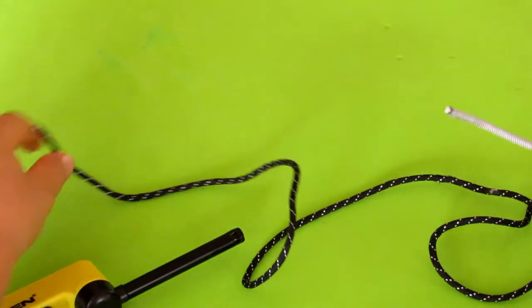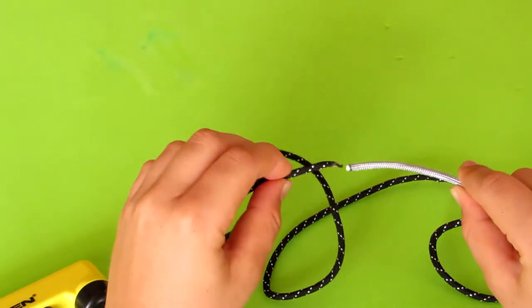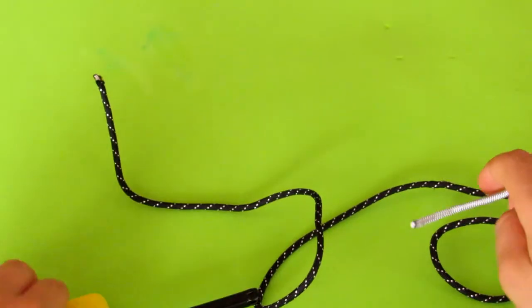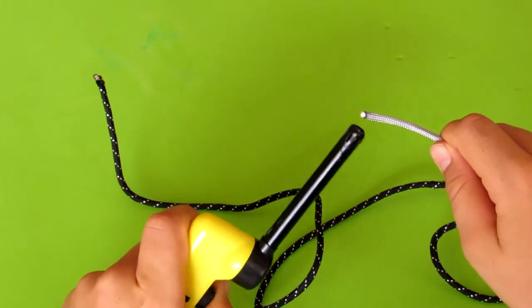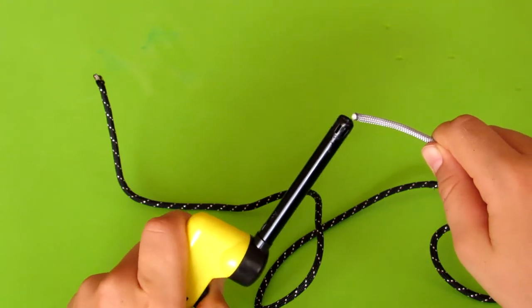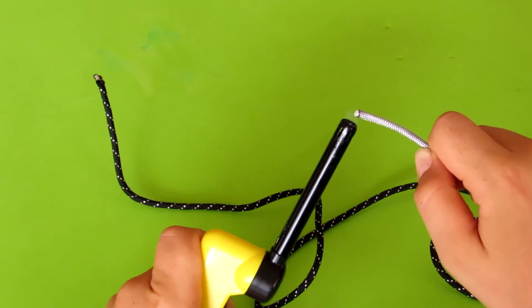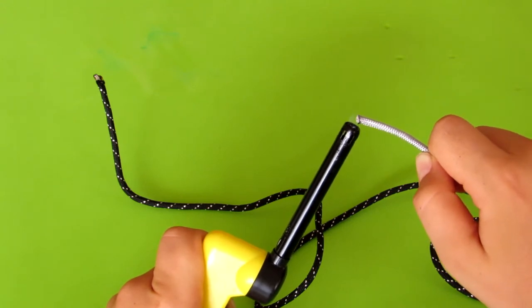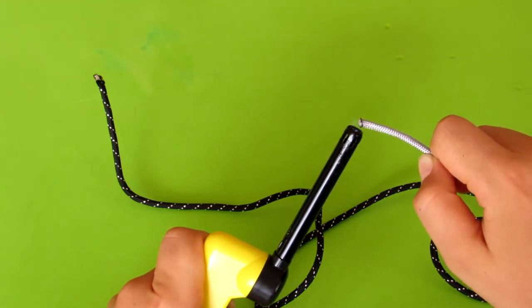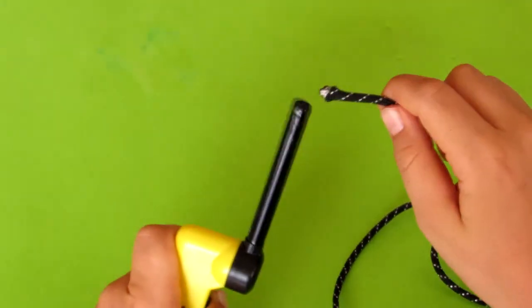Alright, so the first step is you're going to have to melt these two different colored paracords together. So we're just going to start by lighting and melting this one. There we go. We got it going. Just going to melt it a bit. And yeah it is melting. Don't worry.